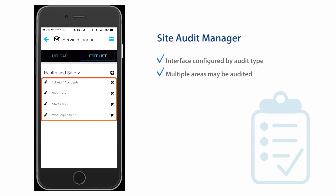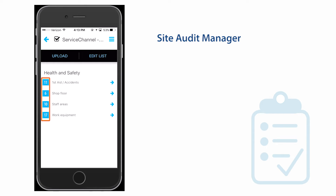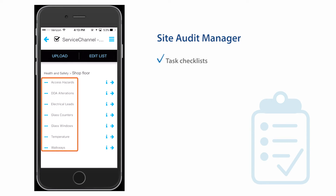Multiple areas may be available for auditing. The numbers on the left tell you how many unaddressed tasks are remaining within each area — for example, six on the shop floor and ten in staff areas. Each area has a checklist of audit items to assess. As items are checked, they can be marked yes, no, or not applicable. In some configurations, a number can be assigned to each item, such as a 1 to 5 rating.